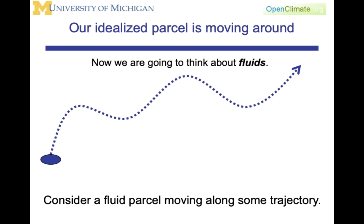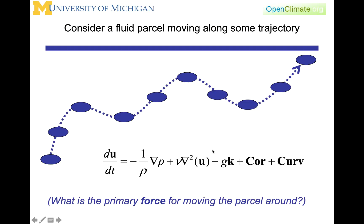We're going to have this idea of a parcel, and this parcel is going to be moving along some trajectory. As it moves along that trajectory, it will be behaving according to the momentum equations, and we will be looking at what are the forces moving the parcel around. In the atmosphere, the primary force that's going to generate motion is going to be the pressure gradient. We'll be dealing with the Coriolis forces, and with regard to vertical motion, we'll have gravity. These will be the primary forces that we're concerned with.